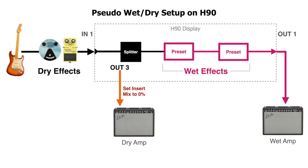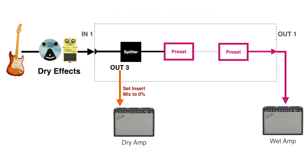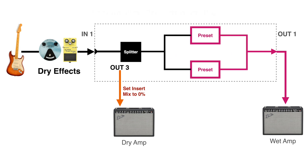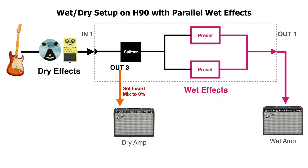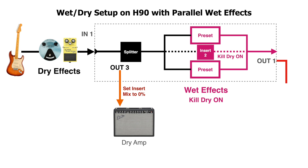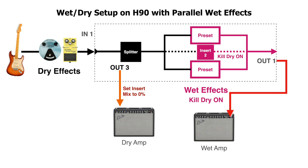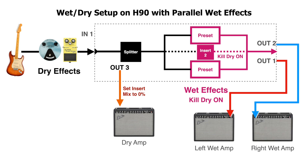To show how parallel wet/dry works, go back to the previous wet/dry example and simply change the routing to parallel. Make sure all the effects in the wet chain are set to Kill Dry on. Here the H90 acts as our parallel mixer. We can even use a second insert to use a mono effect in parallel with other stereo effects — just make sure the outboard effect can run in Kill Dry or 100% wet. Then we can use out 1 to a single amp for wet/dry, or add out 2 to another amp for wet/dry/wet.